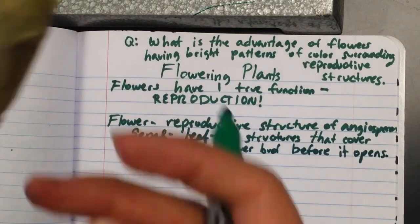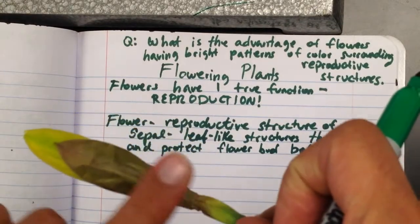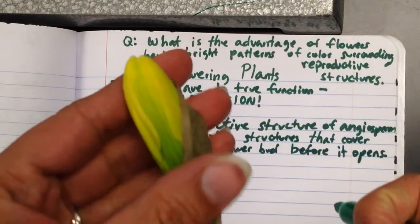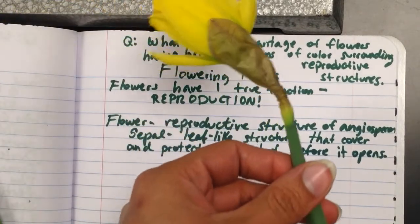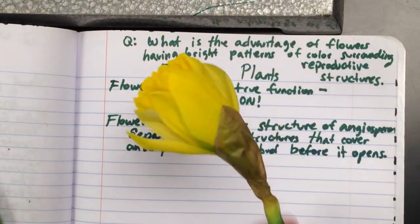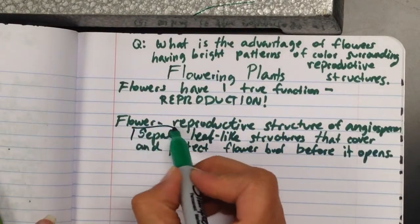So I have a daffodil here that hasn't opened yet, and you can see the sepal really clearly here. It's this kind of little leaf here, and right now the flower has not opened. Here's one that has opened, and you can see the sepals being pushed back. So those are our sepals.